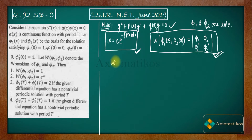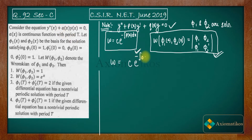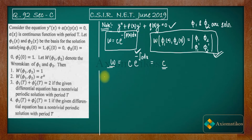According to the first formula, if we compare our problem with the standard equation, p(x) in this equation is zero. So the integral of p(x) dx is zero, and we get c·e^0 = c. So the Wronskian should be c, a constant — but we need to find what c is.